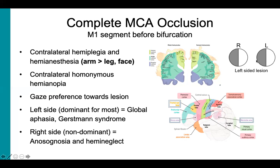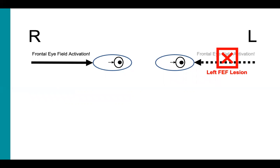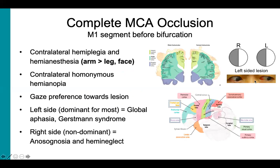Additionally, MCA strokes affect the frontal eye fields, which we see here. They're located in the frontal lobe in the posterior part of the middle frontal gyrus. Normally, our eyes are kept centered because of the right and left frontal eye fields being activated on the eyes equally. If there is a lesion to one side, you remove the activation from that side and thus the other side dominates. This will make both eyes deviate toward the lesion. If we have a left frontal eye field lesion, the right frontal eye field will dominate because it's still activated. This will push the eyes towards the left, towards the lesion, and this is called a gaze preference. Here's a real example of the gaze preference that results from a left-sided lesion to the left frontal eye fields.